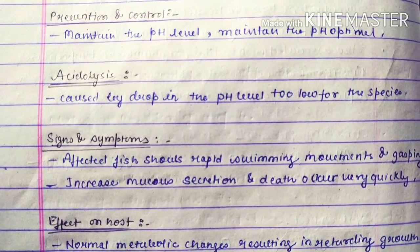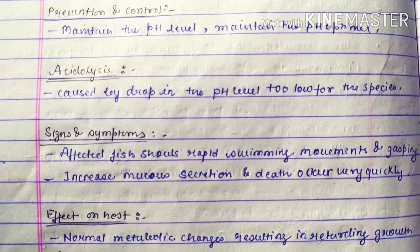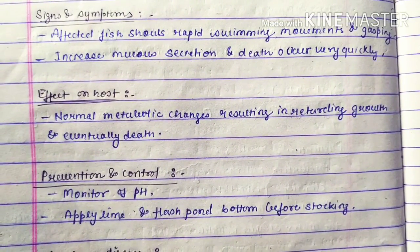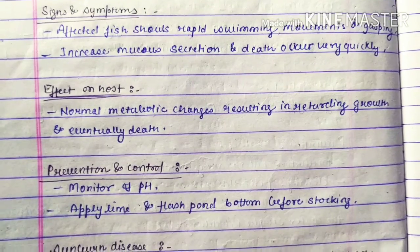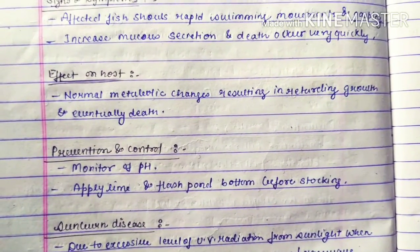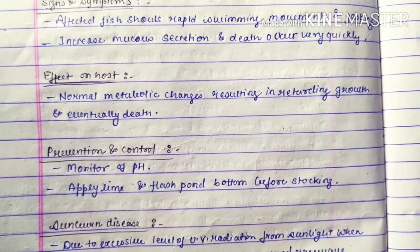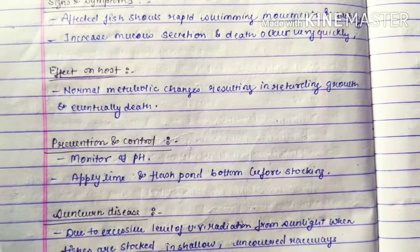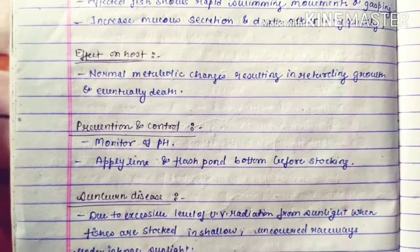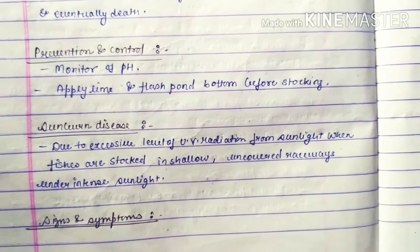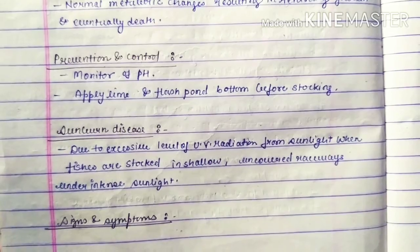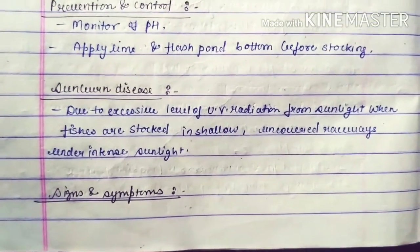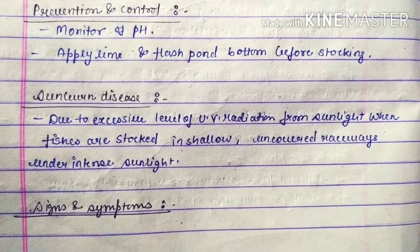Acidosis may be caused by a sudden drop in pH level too low for the species. Signs and symptoms include the affected fish showing rapid swimming movement and gasping, increased mucus secretion, and death occurring very quickly. Effects on the host include abnormal metabolic changes resulting in retarded growth and eventually death. Prevention includes monitoring pH and applying liming and flushing of the pond bottom before stocking.